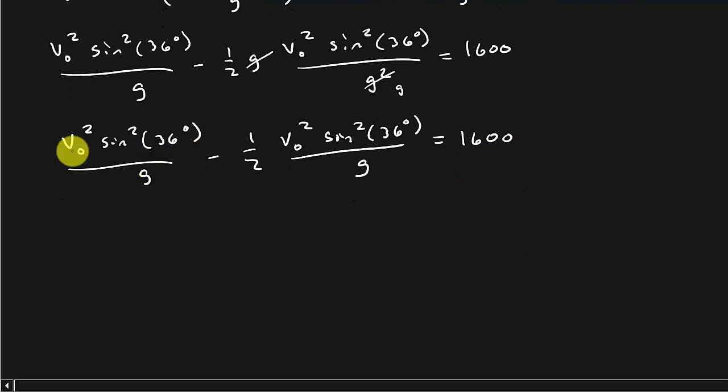You can see this is a common term here. V naught squared sine squared 36 over G. This is a 1 in front. So 1 minus one half, that's going to give me one half V naught squared sine squared 36 over G equals 1600.